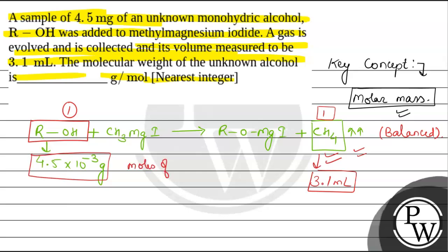Moles of ROH equals moles of CH₄ — one being consumed, the other being produced. So: moles of ROH = given mass (4.5 × 10⁻³ g) divided by molar mass M, and this equals the moles of CH₄.